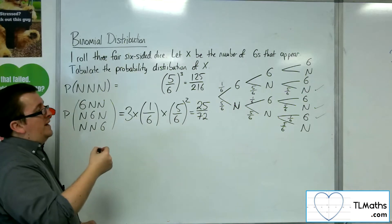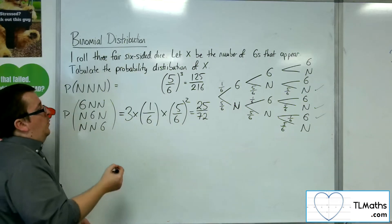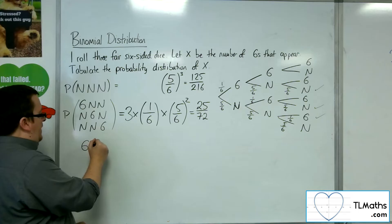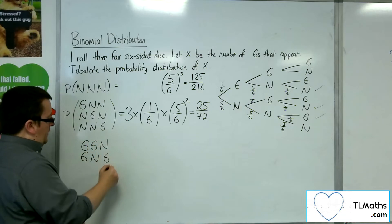So how about now getting 2 sixes? Well, I could either have got a 6, a 6, and then not a 6, or 6, not a 6, 6, or not a 6, 6, 6.